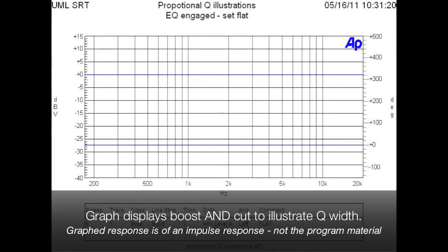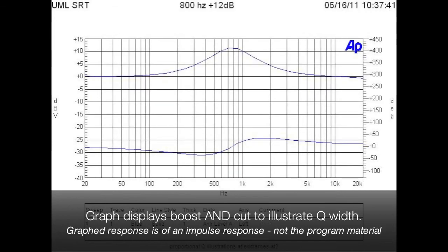Setting the high-mid filter to its extreme of plus 12 dB, we'll gradually step through the prescribed frequencies with the high-mid filter. Beginning with 800 Hz, boosted 12 dB.